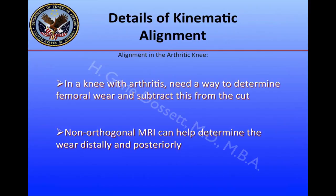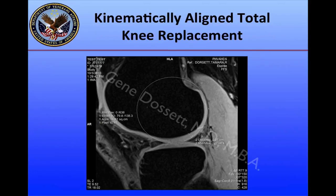In a knee with arthritis, we need a way to determine the femoral wear and subtract this from the bone and cartilage that is cut. We can use a non-orthogonal MRI to help determine the wear distally and posteriorly. Preoperatively, we have an MRI sequence to plan a patient-specific guide, then switch to a non-orthogonal view where radiology reports the thickness of the cartilage present at 0 degrees — our distal cut — and 90 degrees for our posterior cut.